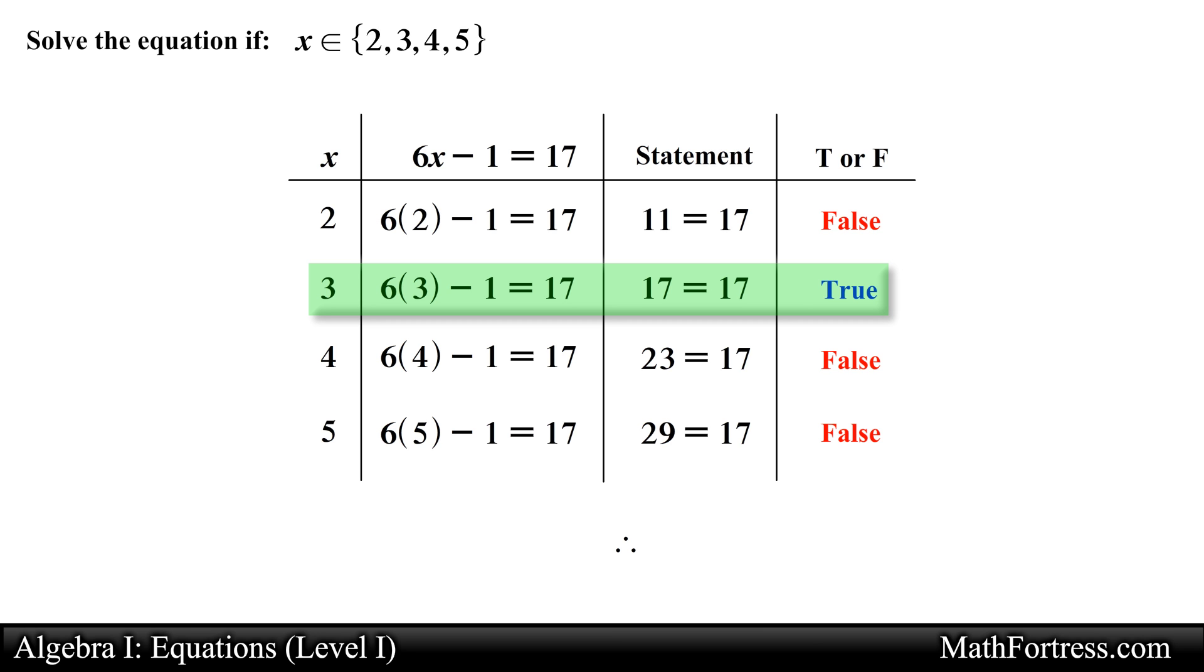We use three dots arranged in the form of a triangle. This symbol is read therefore. And the solution or roots of the equation is enclosed in braces like this. We conclude that the solution set is equal to 3.